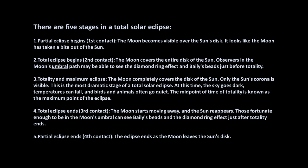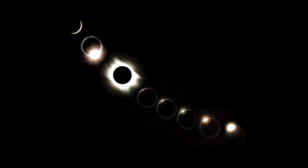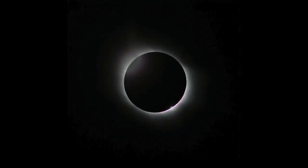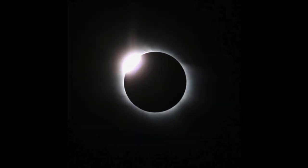Third contact is when we start to see the diamond ring effect reverse, and then we get out of the eclipse at fourth contact. Here's the sequence: you can see the diamond ring effect, and then during maximum we're actually able to see the Sun's atmosphere, or corona. Then you can see the diamond ring effect reverse on the other side. This is an illustration showing that flash of light — the diamond ring effect — and then you can see Bailey's beads, that reflection off the valleys of the surface of the moon.